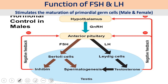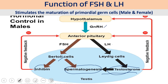So the sequence is: hypothalamus releases GnRH, then FSH and LH work on Sertoli cells and Leydig cells to produce testosterone. This testosterone drives the spermatogenesis process. Sertoli cells also produce inhibin and activin, which provide negative or positive regulation.